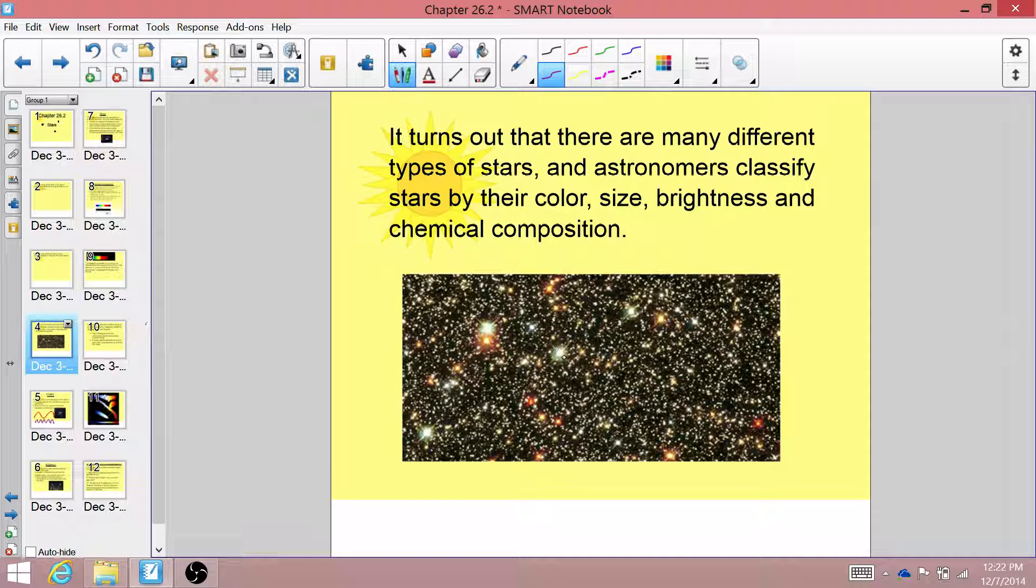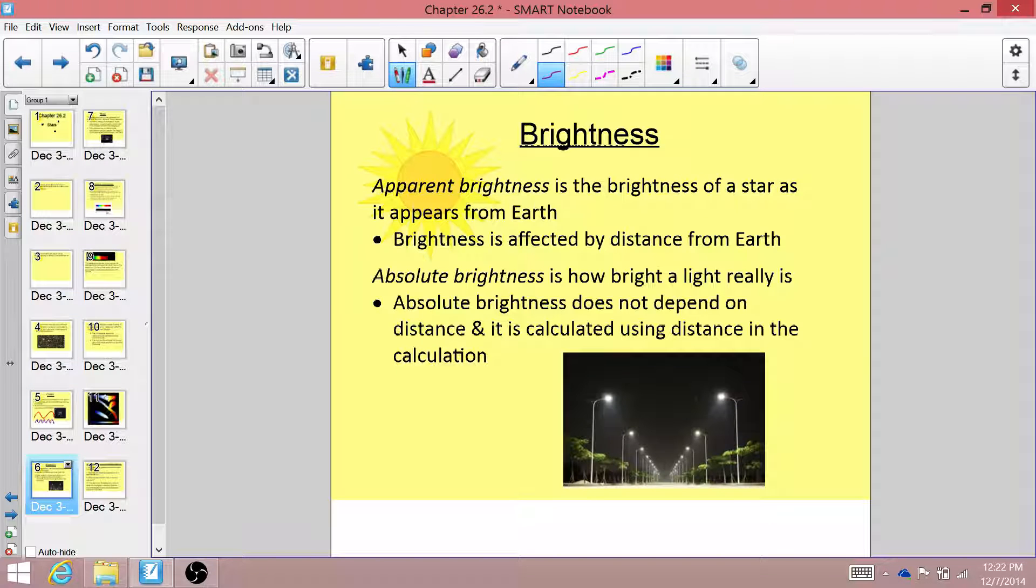But from Earth, when we're looking at these stars, some of them look very, very bright, and some look very, very dim. What we see in this picture is what we call apparent brightness. On the other hand, absolute brightness is actually how bright a star really is.